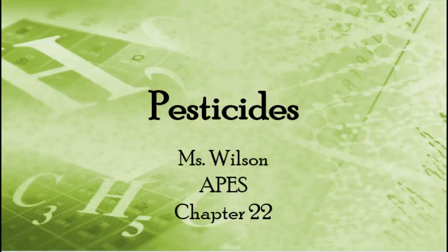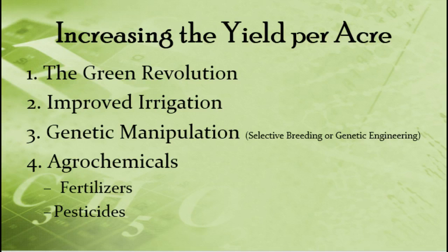Hello, today we're going to be talking about pesticides, and this goes along with chapter 22 in your book. So remember last time we talked about yield — how much a farmer is able to grow — and there are four basic ways to increase yield. We need to do that because of our growing human population. The green revolution that we talked about last class has helped quite a bit, and improvements in irrigation techniques have helped as well.